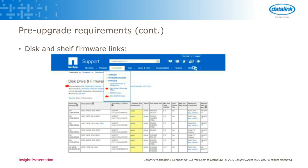This shows where the links are on the support site. If you hit the Downloads dropdown, the first link is for the disk drive firmware, the second is for the disk shelf firmware. The disk qualification package is actually buried within the disk drive firmware page, so that first top link is where you'll find it. Make sure you get all three of them. It kind of automates itself once you get them out into the system, but you want to make sure you get those all updated ahead of time.